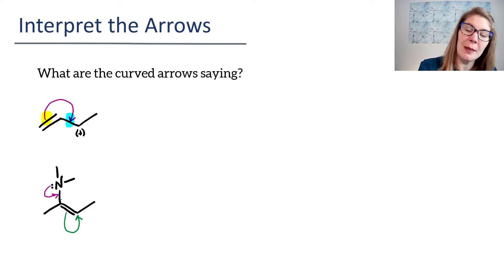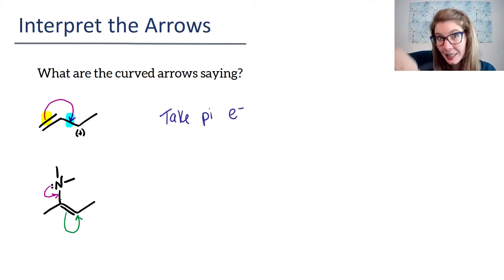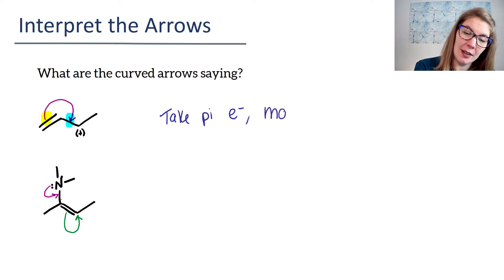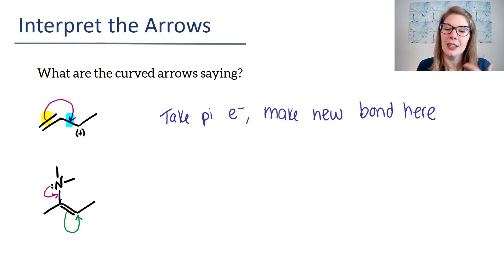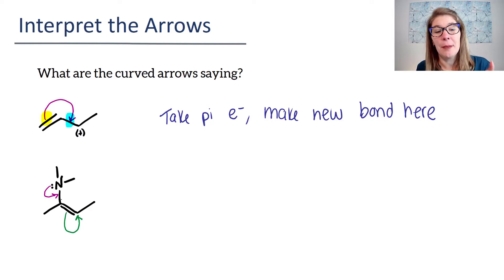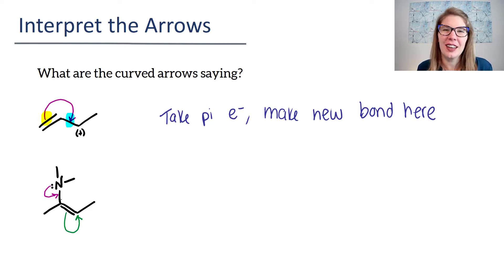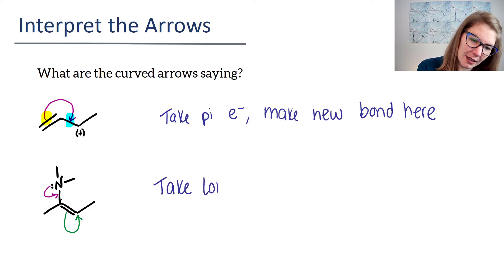Let's write that out. When we start at the middle of a pi bond, that's saying take pi electrons. When we point to the middle of a sigma bond, it's saying make new bond here. I'm using caveman talk without all the words because resonance is so overwhelming that when I write complete sentences students get lost. But if you want a complete sentence: take these pi electrons and place them as a pi bond between the two carbons where the arrow is pointing to.